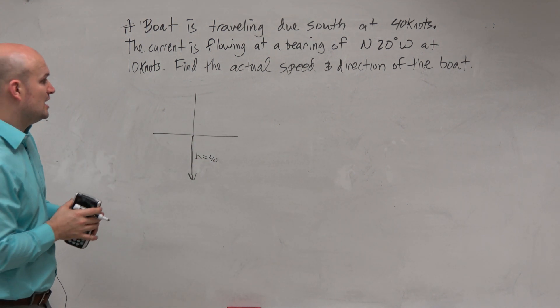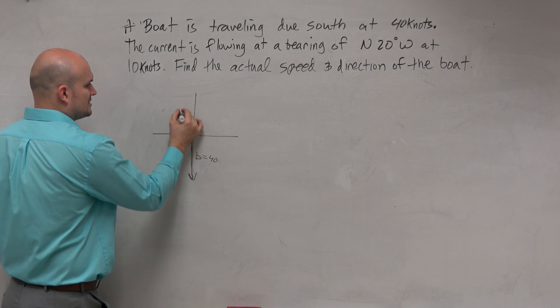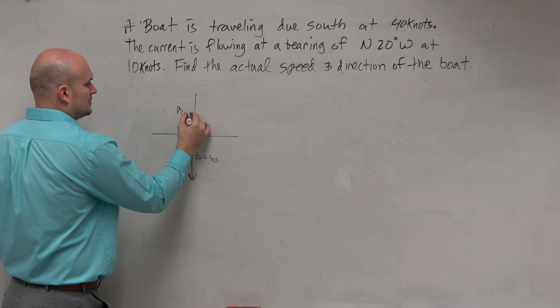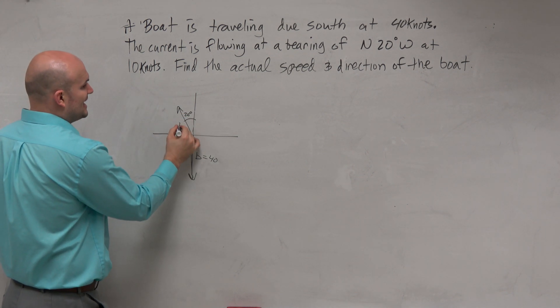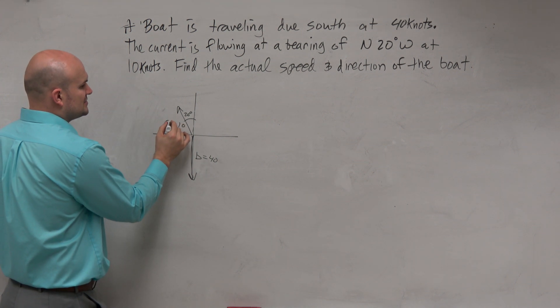Then we have a bearing of north 20 degrees west. So north 20 degrees west. So that's going to be bearing like this. And that is flowing at 10 knots. And that is going to be our current. So let's use C.